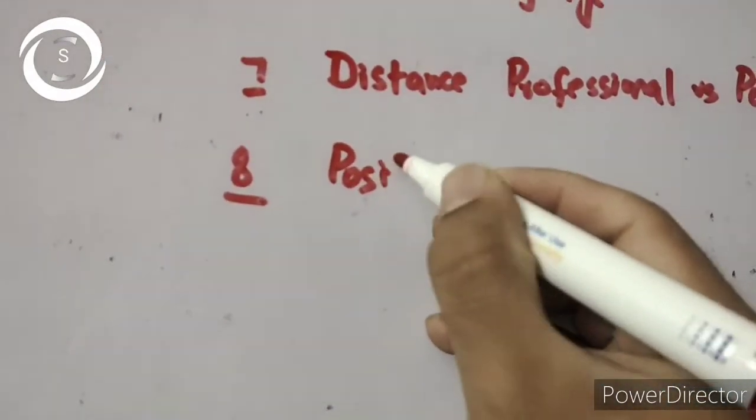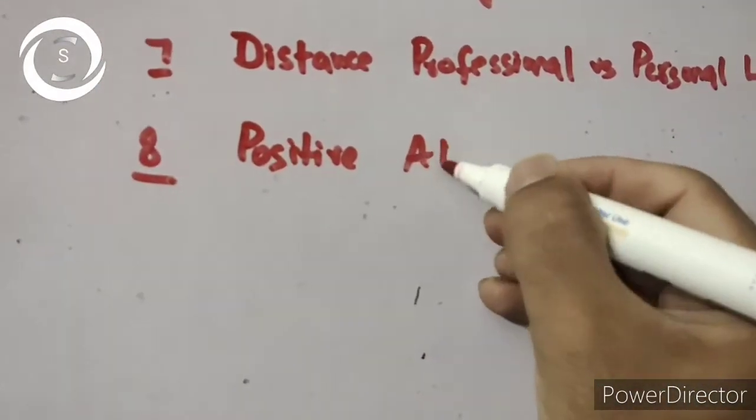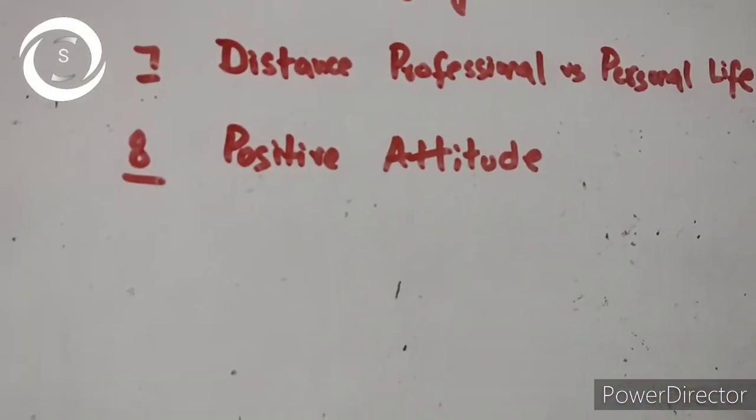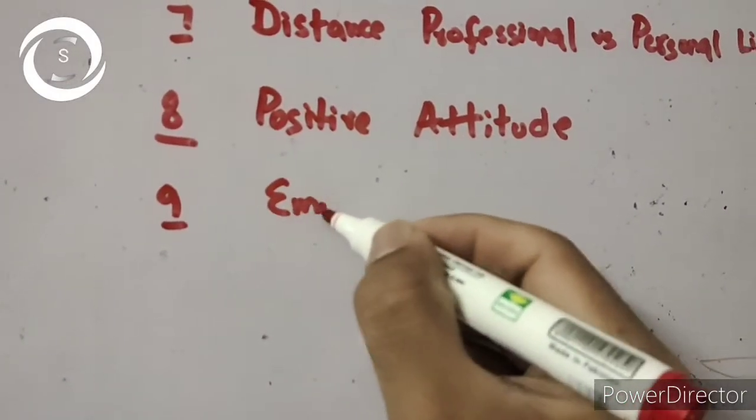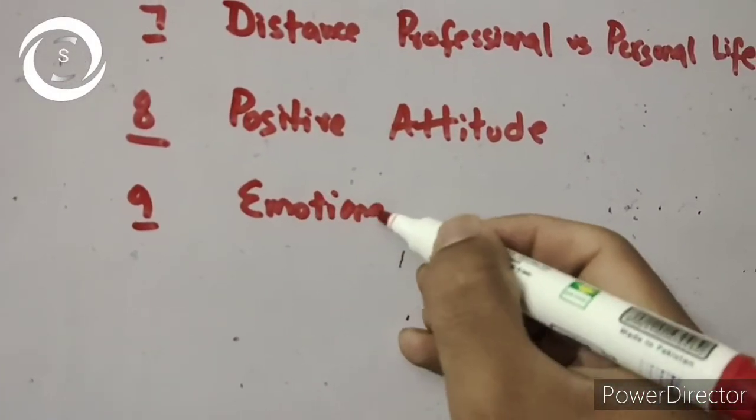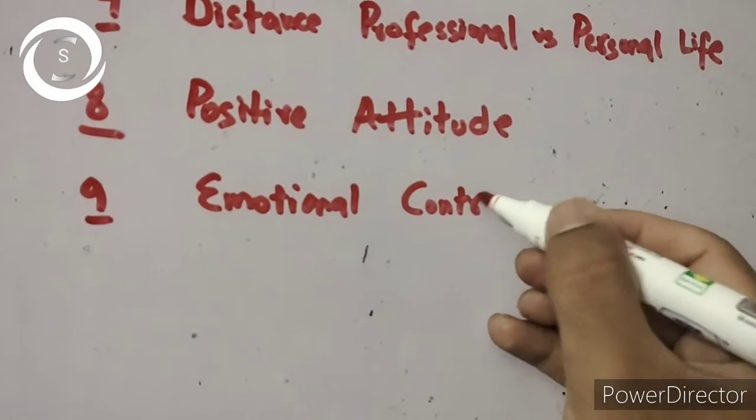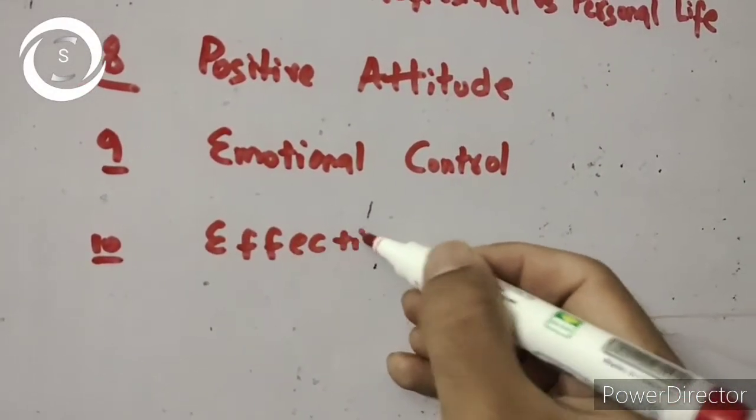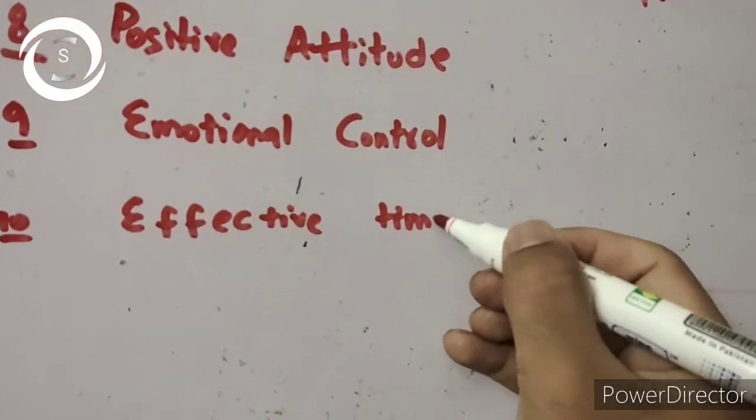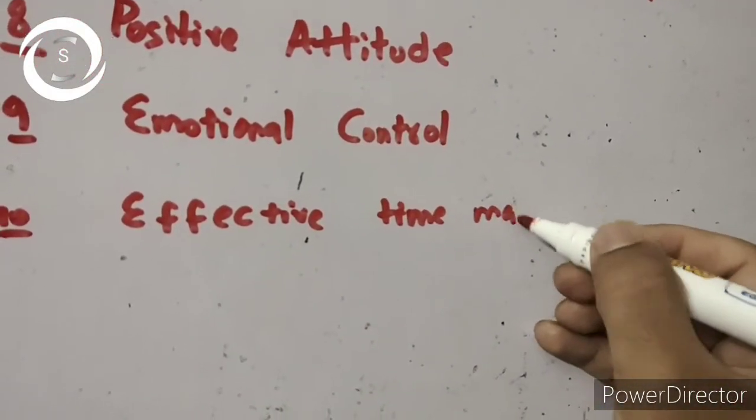Emotional control means staying calm and composed in all situations. Effective time management is one of the key characteristics of a true professional to complete their work in due time. Sometimes there will be a heavy workload, but you should be able to manage it in time.